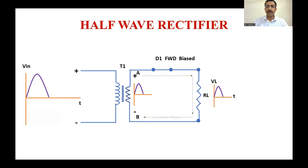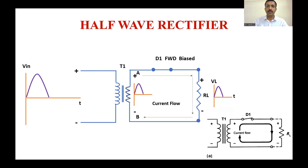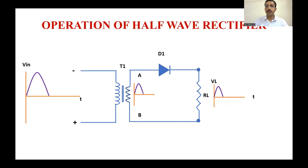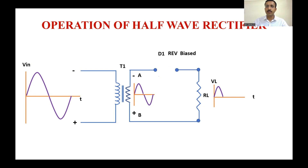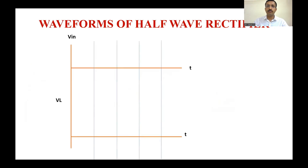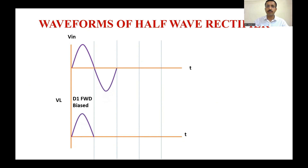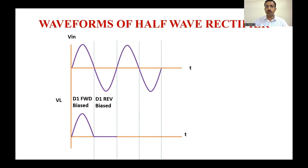The flow of current is in this direction. In the negative half cycle, the diode goes into reverse bias and acts as an open switch. As a result, no signal is obtained at the load terminal RL. In the waveform, you can see that in the positive half cycle D1 is forward biased and a signal is obtained, while in the negative half cycle no signal is obtained at the output.